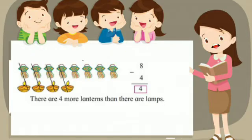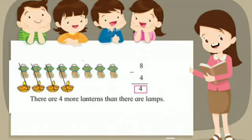Subtraction by Pairing off. There are 8 paper lanterns and 4 lamps. How many more lanterns are there than the lamps?